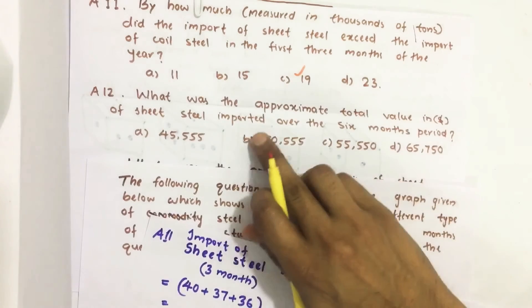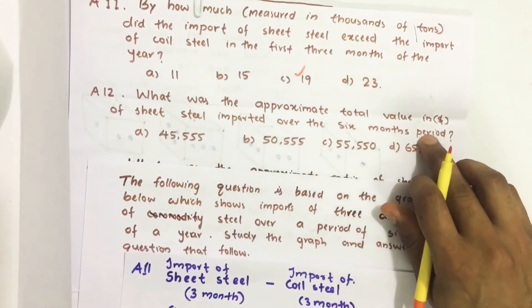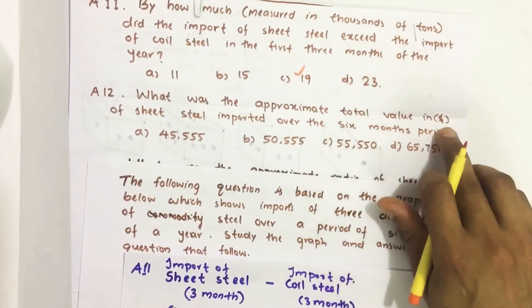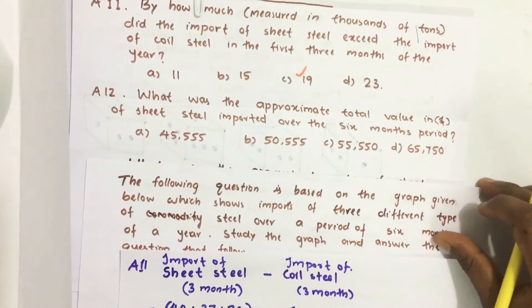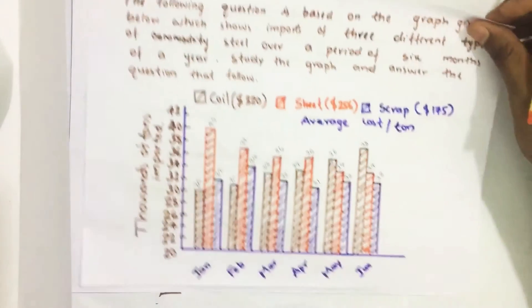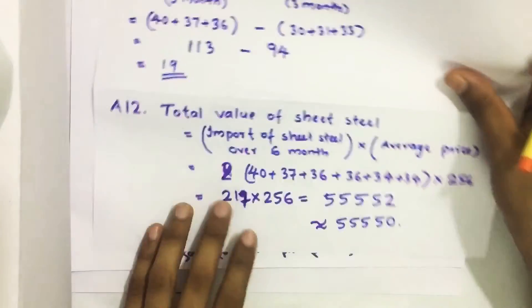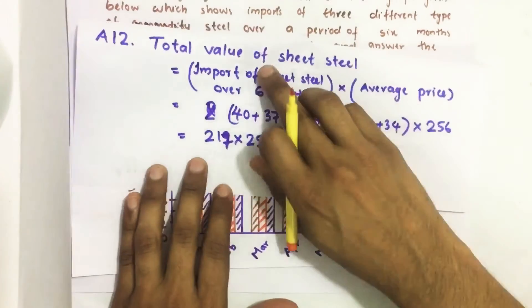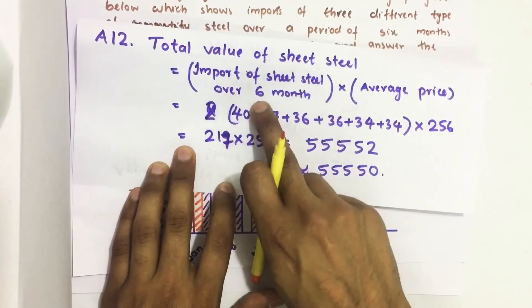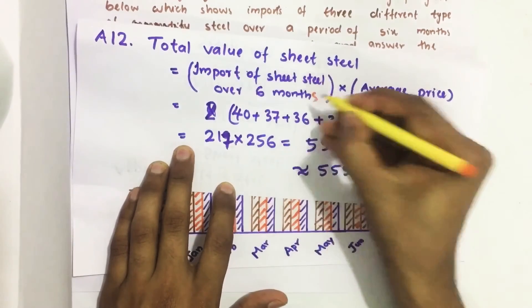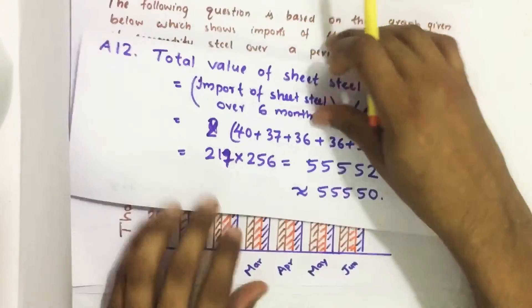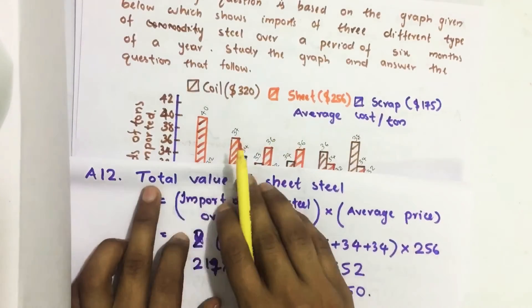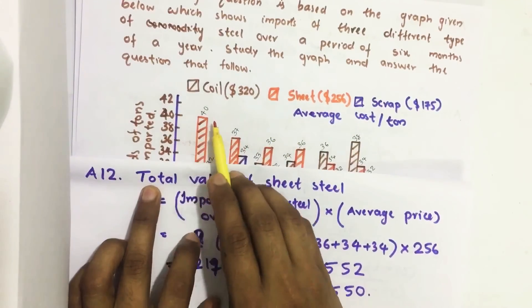The second question: what was the approximate total value in dollars of sheet steel imported over the six-month period? To find it: total value of sheet steel equals total import of sheet steel over six months multiplied by the average price. From the graph we can read each month's import quantity.